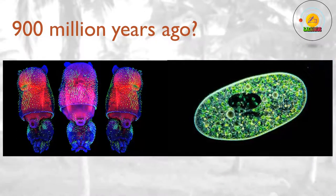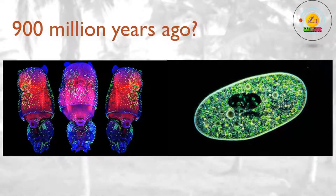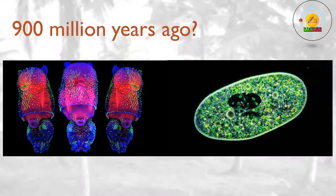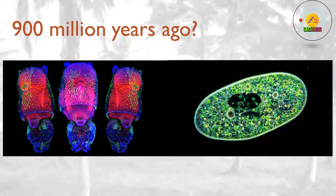900 million years ago? The first multicellular life develops around this time. It is unclear exactly how or why this happens, but one possibility is that single-celled organisms go through a stage similar to that of modern choanoflagellates — single-celled creatures that sometimes form colonies consisting of many individuals. Of all the single-celled organisms known to exist, choanoflagellates are the most closely related to multicellular animals, lending support to this theory.